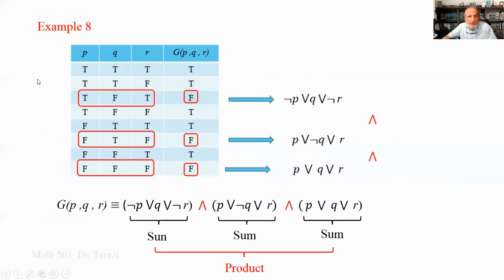Example eight: function G of P, Q, R with three false rows. For each false row I write an OR clause. First false row: NOT P OR Q OR NOT R. Second false row: P OR NOT Q OR R. Third false row: P OR Q OR R. Putting AND between those sums gives G — that is product of sums, CNF.